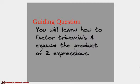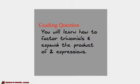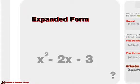We've looked at binomials in the past. Now we're going to look at trinomials — tri meaning three — so we'll have three terms. We're also going to look at how to expand the product of two expressions. So expanded form: something like this, we've got a trinomial of x squared minus 2x minus 3.